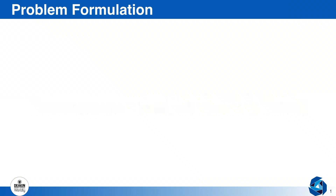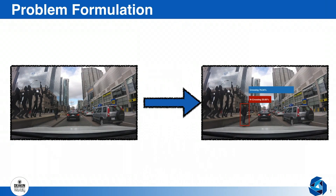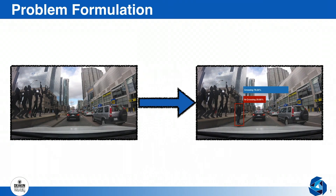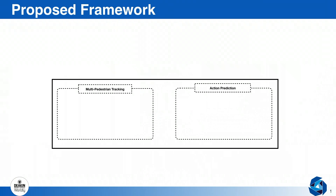We formulate the intent prediction problem as follows. Given a short sequence of images, our task is to predict the intended action of each pedestrian in the scene over the next seconds. In our case, there are two possible actions, namely crossing or staying still. Our proposed framework consists of two consecutive stages, namely the multi-pedestrian tracking stage and the action prediction stage.